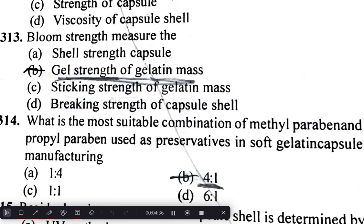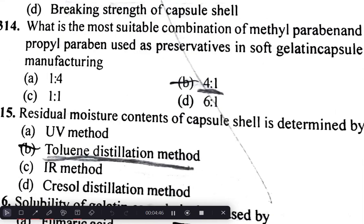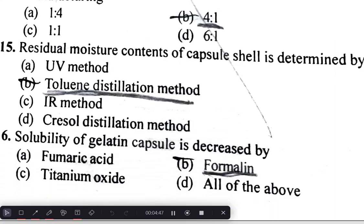The most suitable combination of methylparaben and propylparaben used as preservatives in soft gelatin capsule manufacturing is 4:1. Residual moisture content of the capsule shell is determined by the toluene distillation method, and the solubility of gelatin capsules is decreased by formalin.